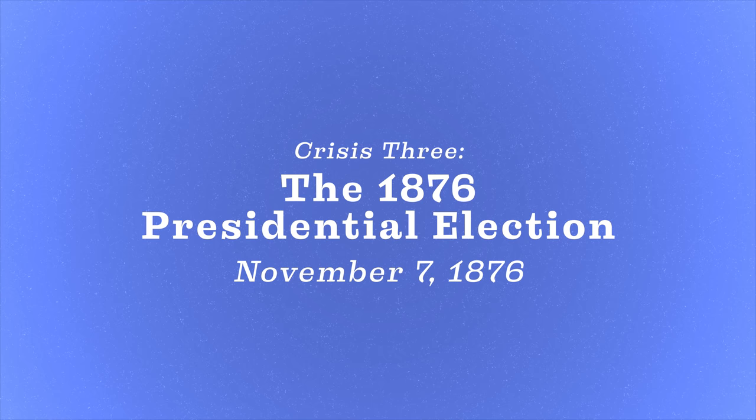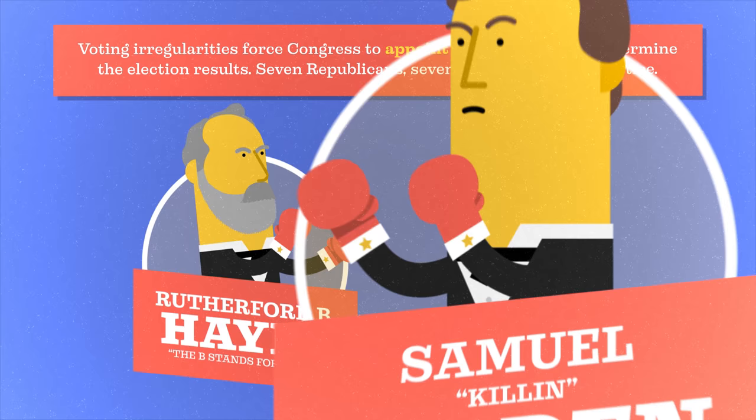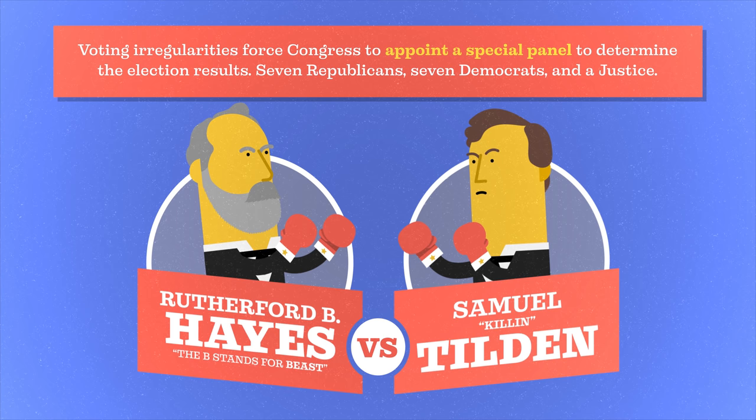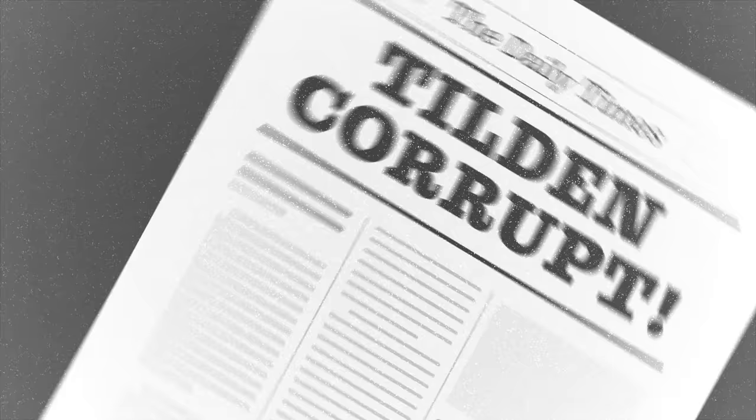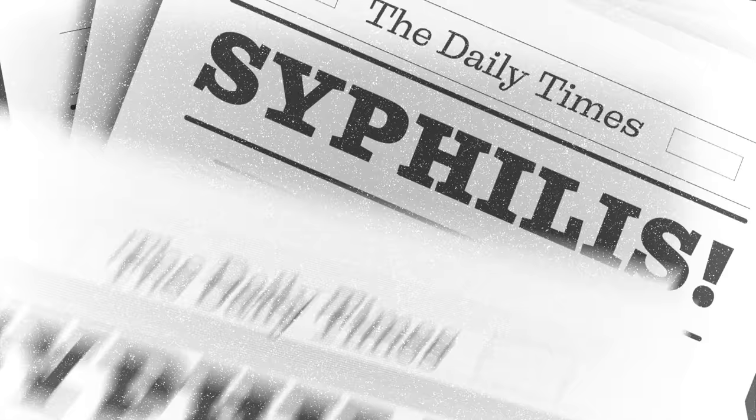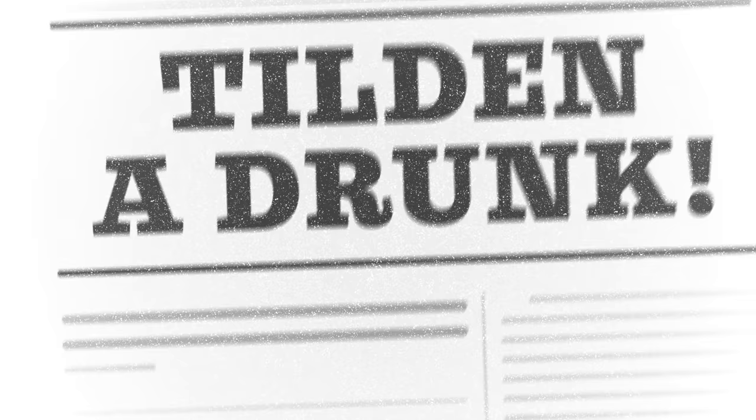And finally, Crisis 3, the 1876 presidential election, November 7, 1876. Voting irregularities forced Congress to appoint a special panel to determine the election results — seven Republicans, seven Democrats, and a justice. What could go wrong? It was a highly contentious election. Tilden was accused of all sorts of things; they called him corrupt, accused him of being riddled with syphilis, called him a drunk. There were also accusations of voter intimidation. Armed white citizens wanted to push the Republicans out of those remaining southern states. We're in the midst of Reconstruction. Many states in the South are still effectively under martial law, being run by the U.S. military. So there's a lot of gray in all of this.